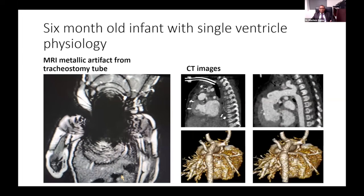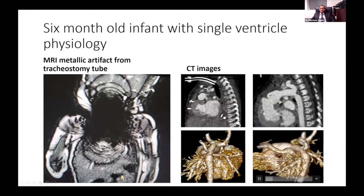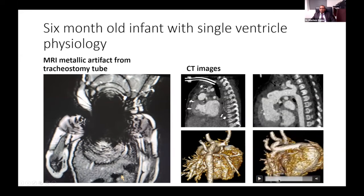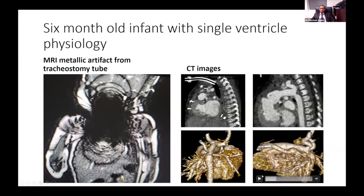This is a six-month-old infant with single ventricle physiology where we wanted to assess flow distribution to the lung and systemic circuit. You can see significantly punched-out signal dephasing in this region on MRI, resulting from a tracheostomy tube causing significant artifact. On cardiac CT, however, you see all the structures — the arch in a volume-rendered picture and the SANO shunt with the clip there going to the pulmonary arteries. Therefore, despite the metallic artifact limitation on MRI, we obtained good anatomic information on this infant.